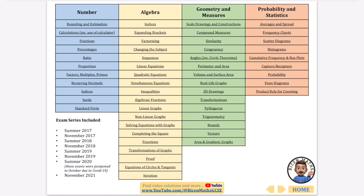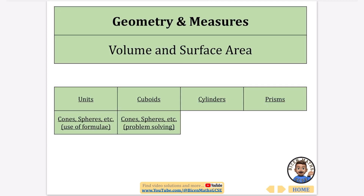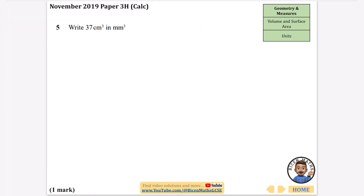I'm continuing with my playlist of every exam question that has ever been asked, and now I'm going to be moving on to volume and surface area. If you want to use this document, it is linked in the description and it's fully hyperlinked, so you can use all of these questions categorized by topic. In this video I'm going to do the units and cuboid section, and then in the second video I'll do cylinders and prisms, and then some other kinds of 3D shapes.